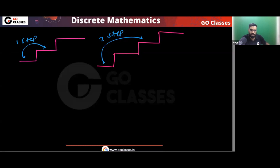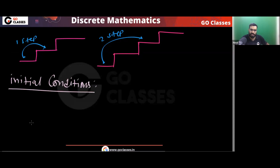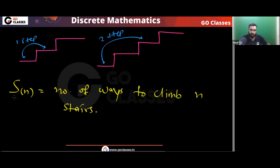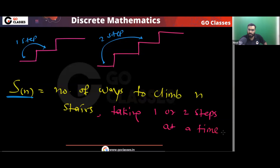Let's see the initial conditions. Let SN be the number of ways to climb N stairs, taking one or two steps at a time. If you have two stairs, you can go 1,1 or directly take two steps. So S2 equals 2. If you have only one stair, then there is only one possibility, so S1 equals 1.